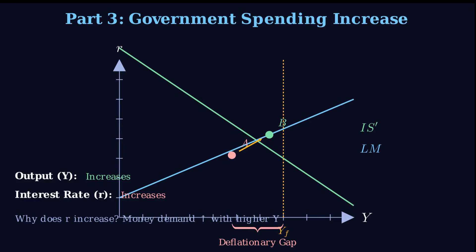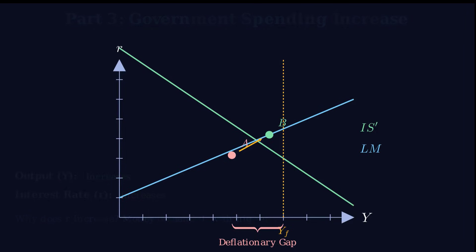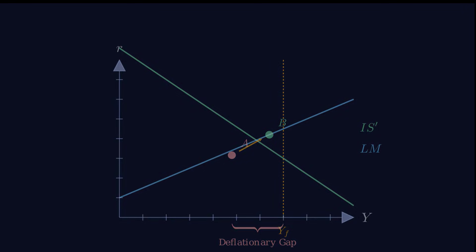Now that we know Y and R have changed, let's look at the breakdown — the sources and uses report. Output equals consumption plus investment plus government spending. Where did all the extra output go, and what was the cost? Let's run the numbers on those components. Total output Y clearly increased — the policy worked in that sense; it expanded the economy and moved us closer to full employment. And government spending G also increased — that was the action that started this whole chain reaction.